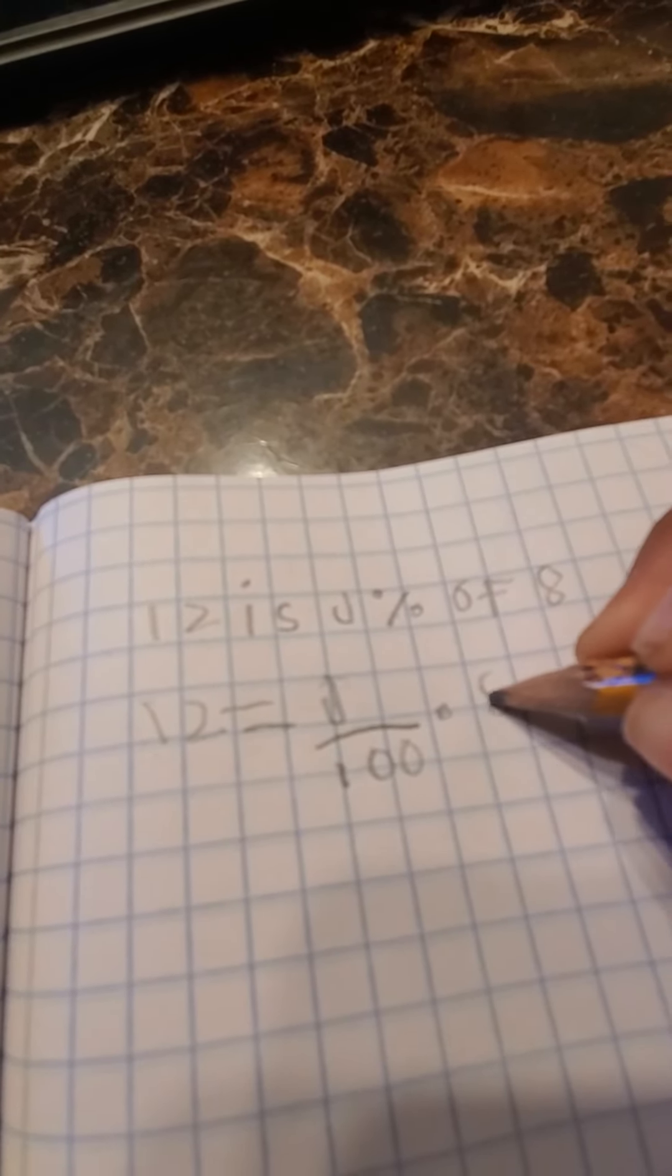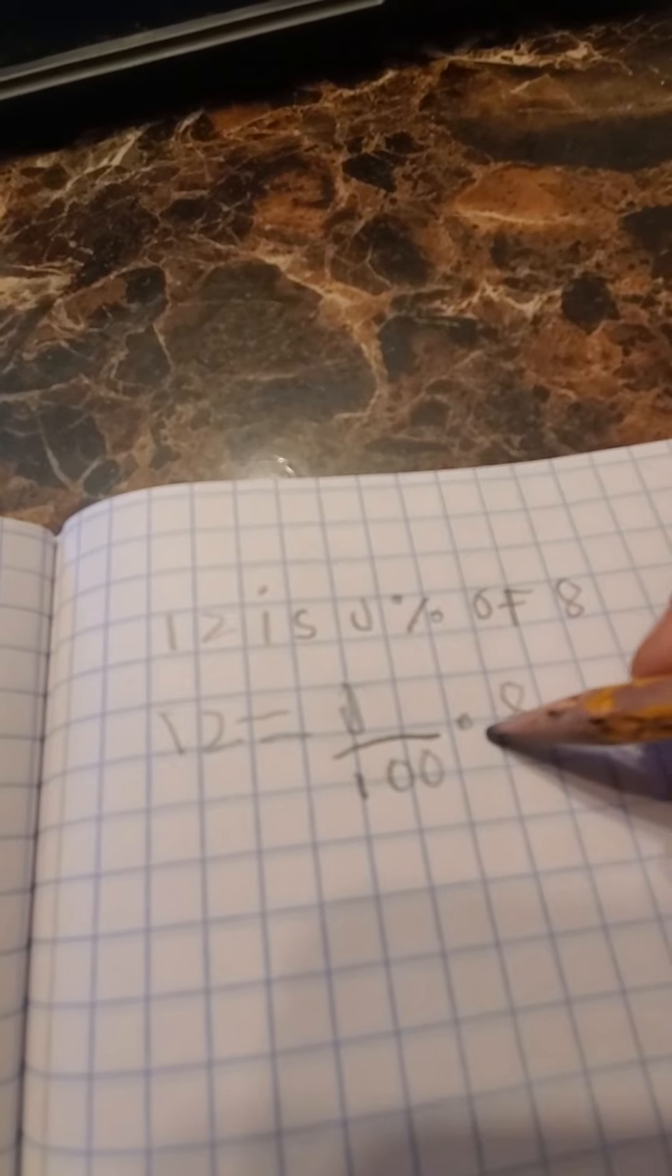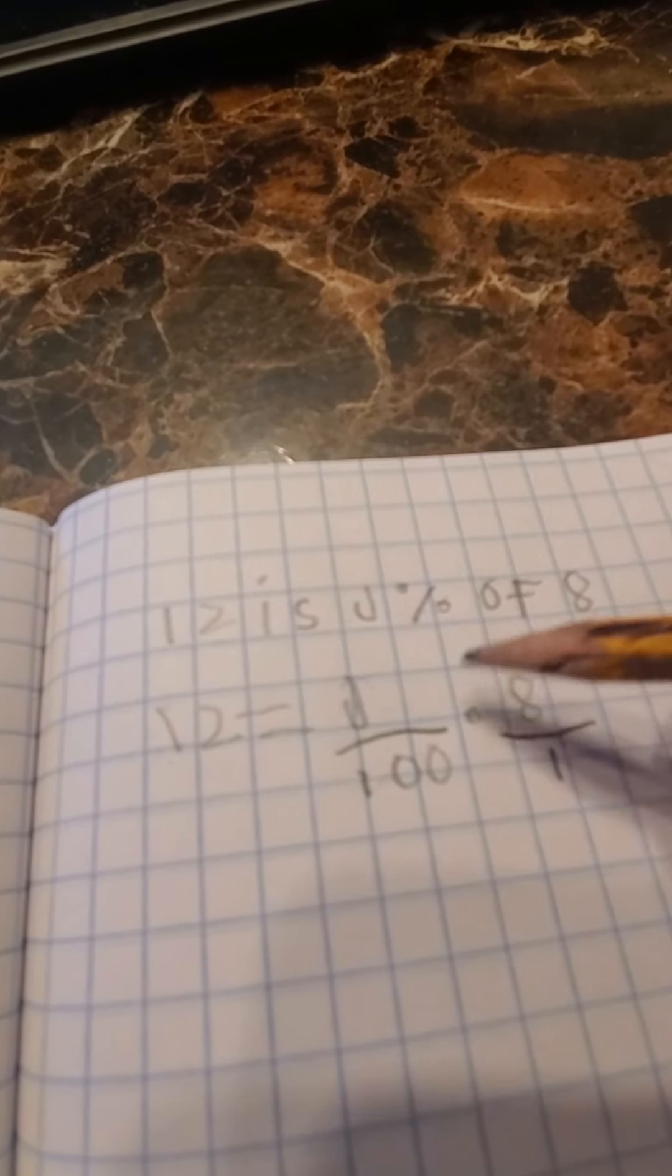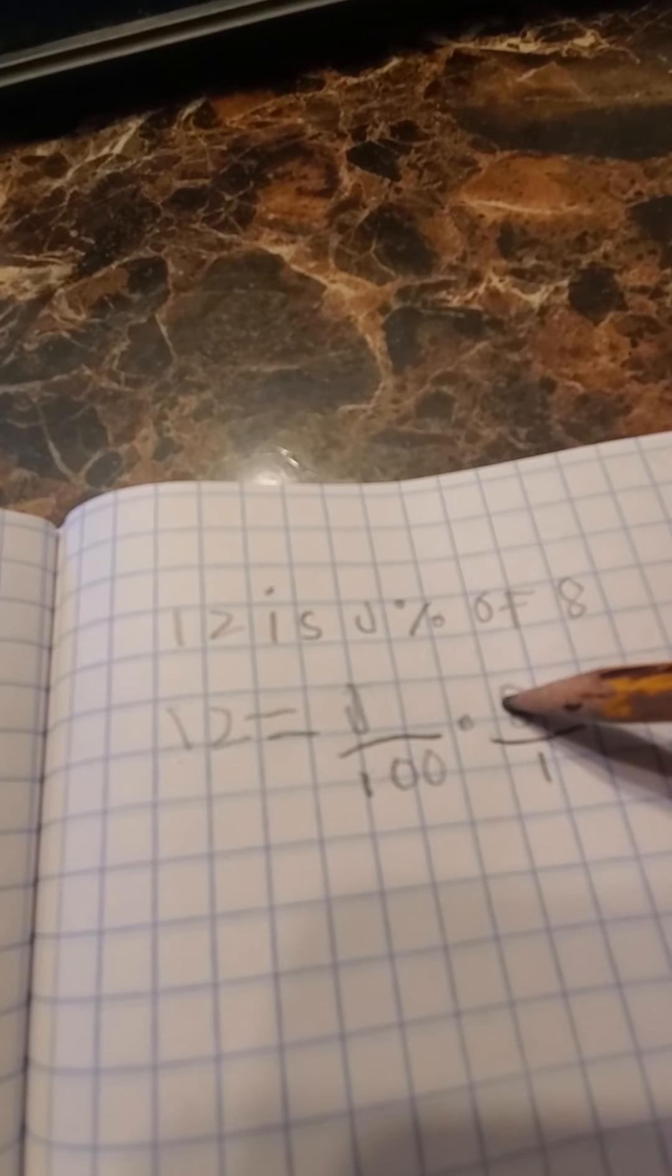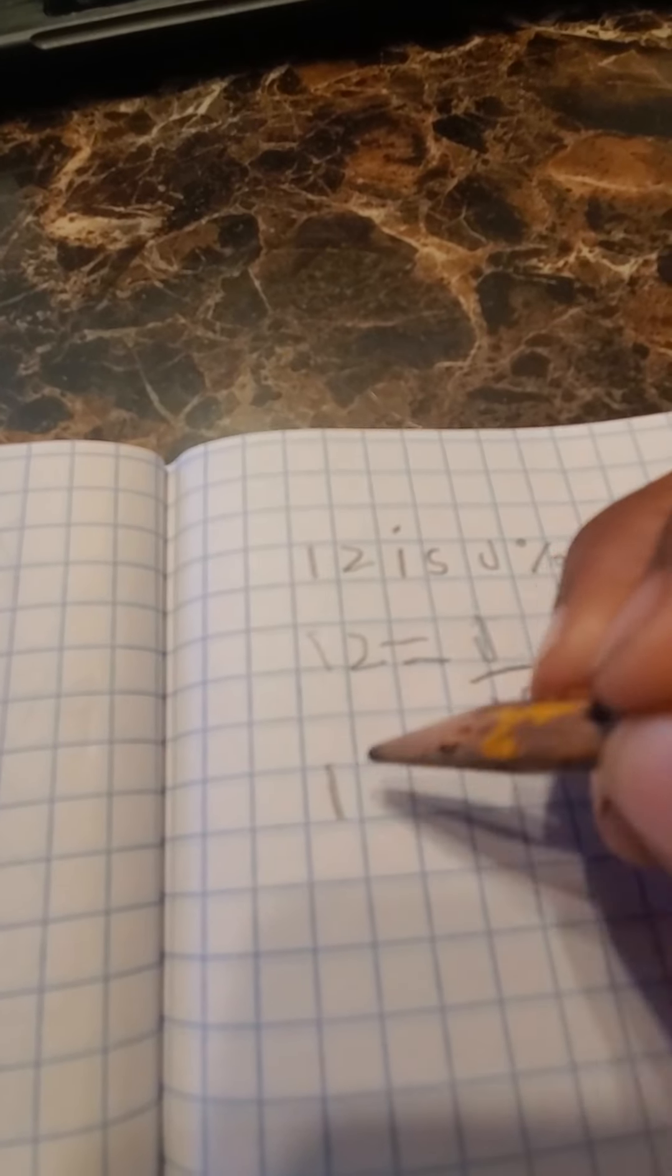Now any number is a fraction by itself, even though it's not always in fraction format first. So 8 over 1. J times 8 and 100 times 1, so 12 equals J times 8.